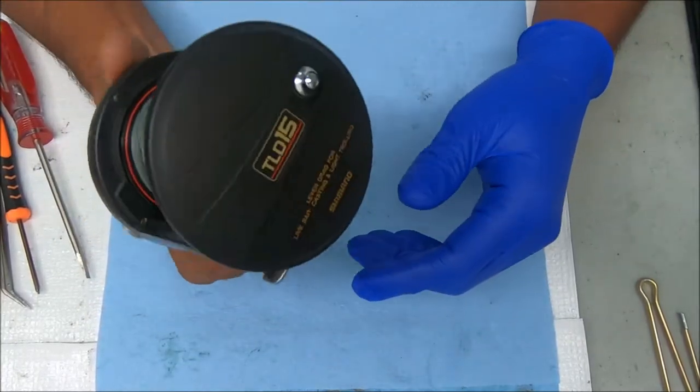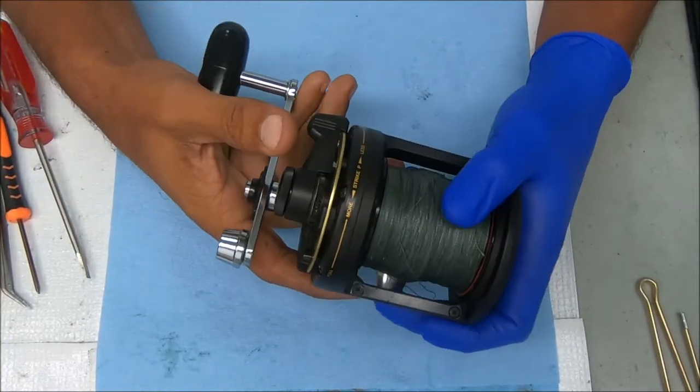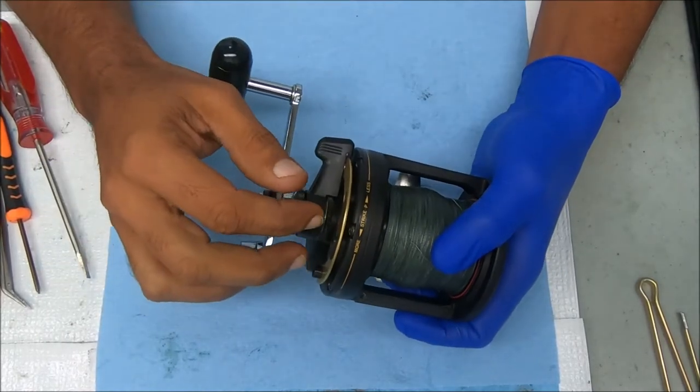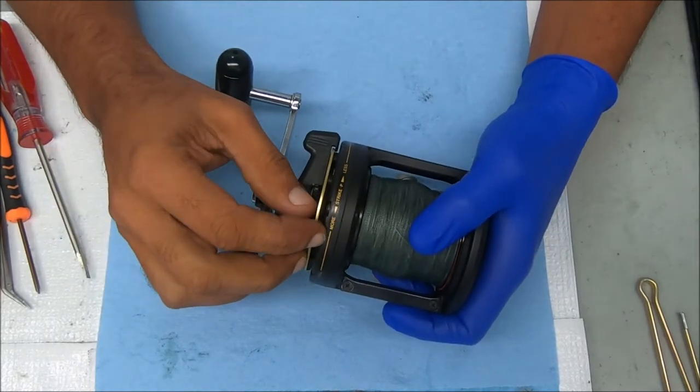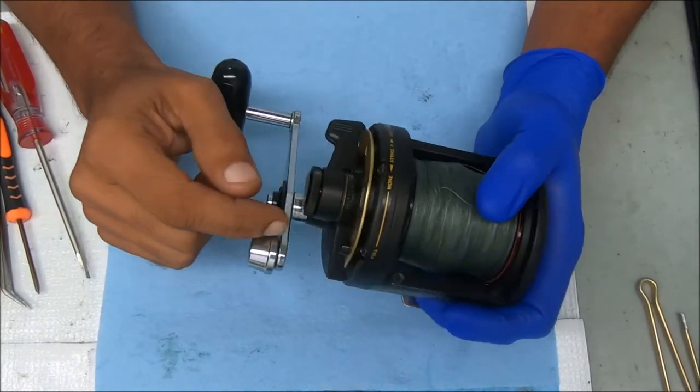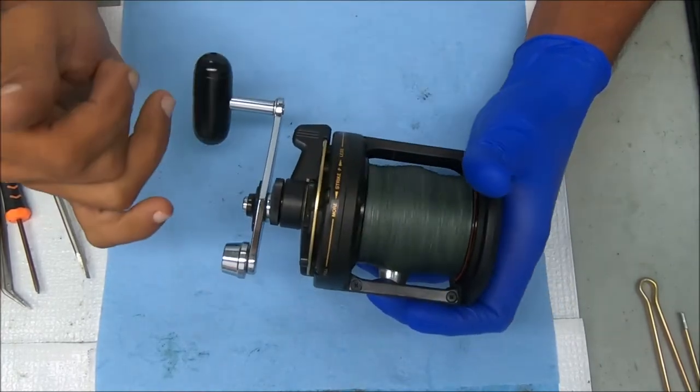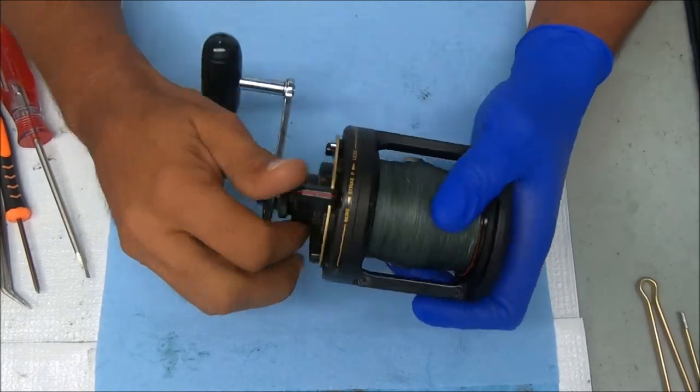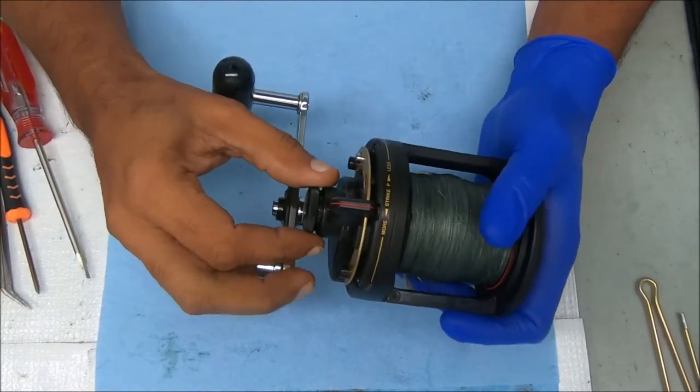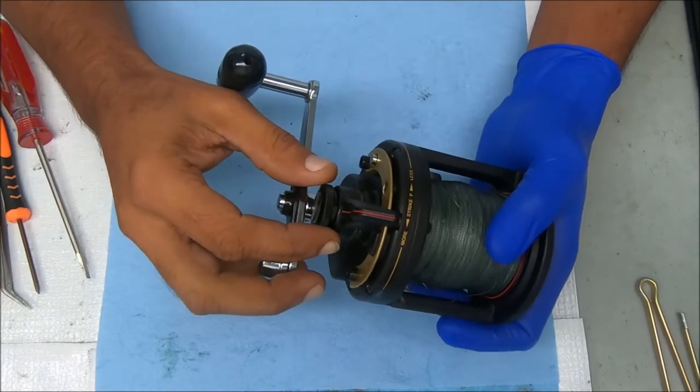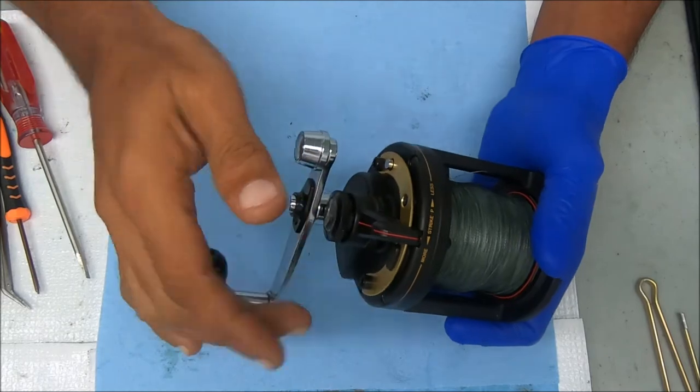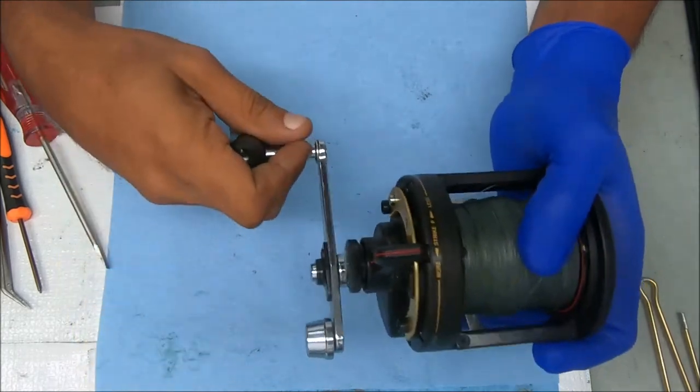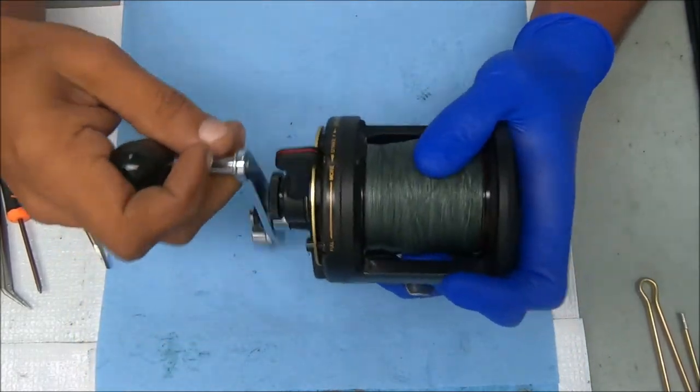Hey y'all, today we have a Shimano TLD15. The complaint on this one is that when it's in drag mode, the drag is slipping. That's what the customer said, and I've tested that out and it slips indeed. We can tell it's not the cam or the lever because it tightens properly, it feels right. We'll still check it anyhow just in case, but it's in strike mode and you can see it's slipping.